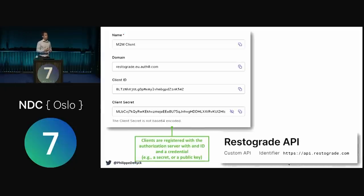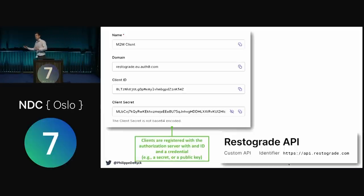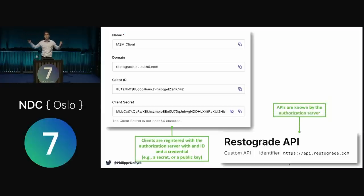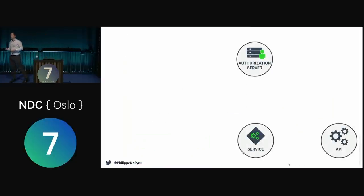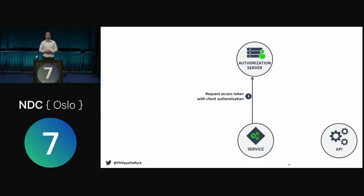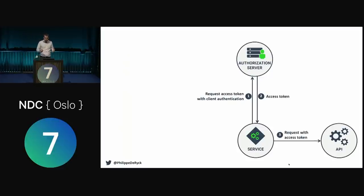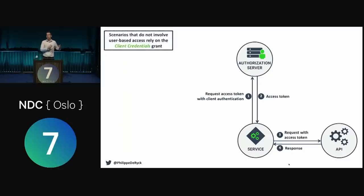APIs are also typically defined at the authorization server. Once we have our client and an API, we can ask for an access token. The client goes to the authorization server using client credentials and says 'I'm this client, here's my client ID and secret, can I get an access token for the API?' The authorization server verifies that and returns an access token. The client can now access the API with it. This is the client credentials flow — a current best practice used quite often for machine-to-machine access and API-to-API communication.